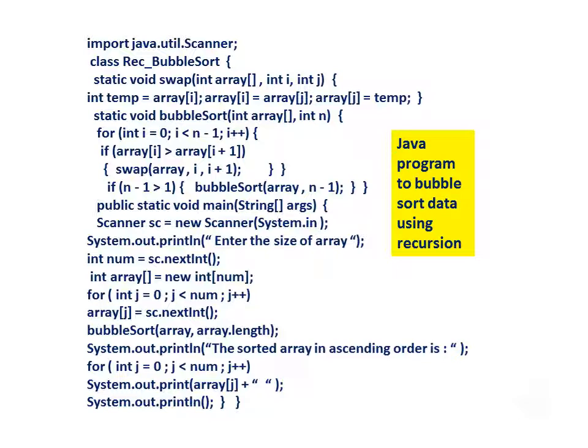Public static void main(String[] args): Scanner sc equals new Scanner(System.in). System.out.println — enter the size of array. Int num equals sc.nextInt(). Int array equals new int[num]. For int j equals 0, j less than num, j plus plus — array[j] equals sc.nextInt().